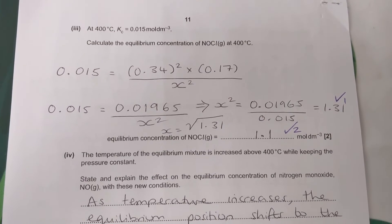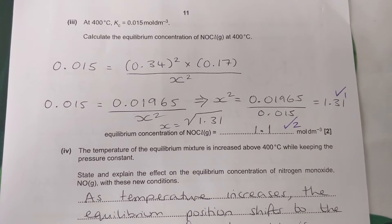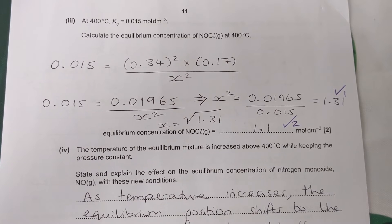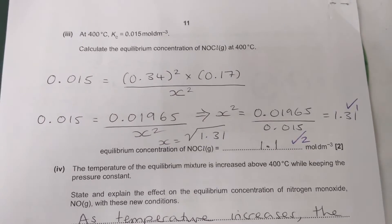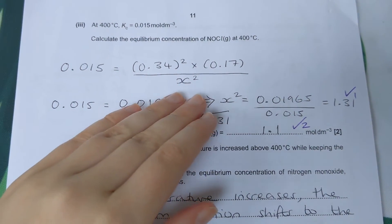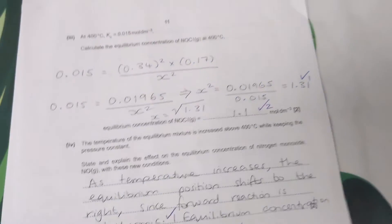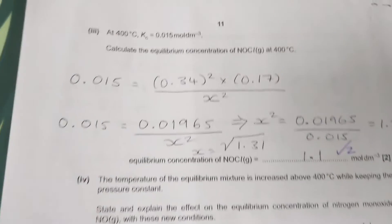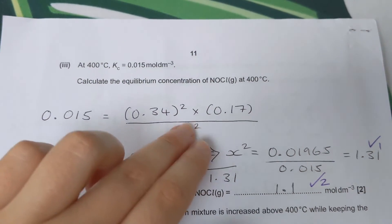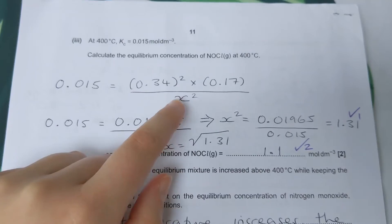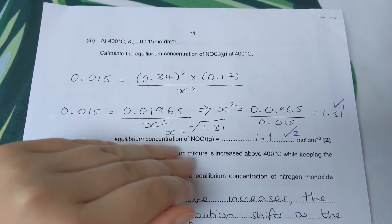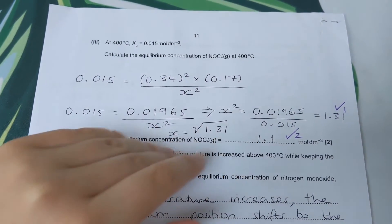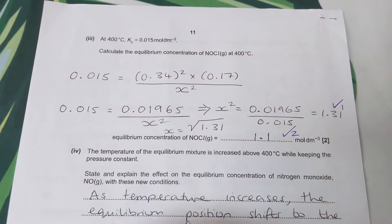Last question: at 400 degrees, KC equals 0.015. This is just like the previous question, where we rearranged to find the unknown. This one is slightly trickier in that we have to remember that there were 2 moles of this in the balanced equation. So that means we have to take that into account here when we calculate it. I've called NOCl x squared. When we work out x, that means we have to square root both sides to get rid of this squared, and we should come out with 1.1.